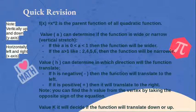Value h can determine in which direction the function will translate. If h is negative, then the function will translate to the left. If it is positive, then it will translate to the right.